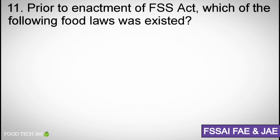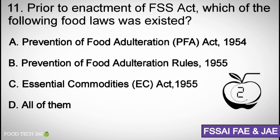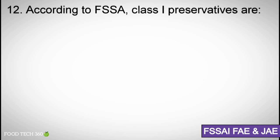Question number eleven: Prior to enactment of the FSS Act, which of the following food laws existed? Options: A) Prevention of Food Adulteration Act 1954, B) Prevention of Food Adulteration Rules 1955, C) Essential Commodities Act 1955, D) All of them mentioned. Correct answer: D) All of them.